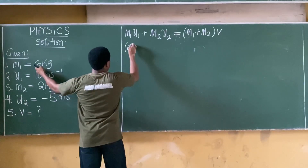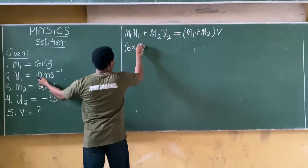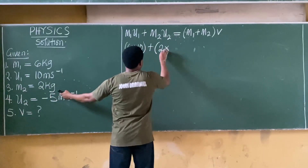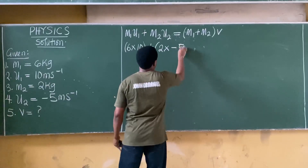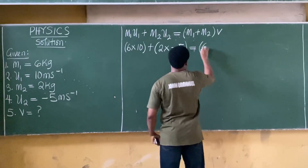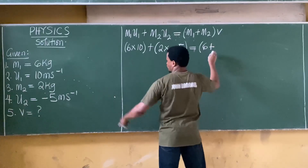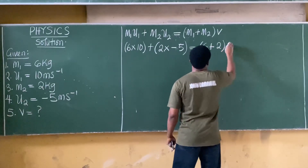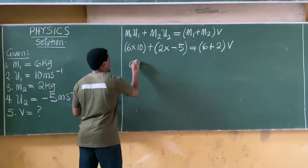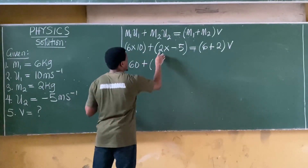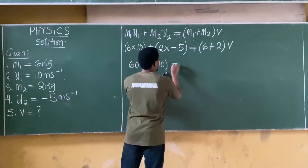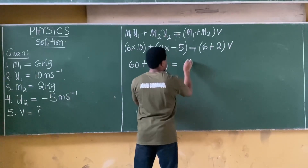Let's substitute the values: m1 is 6, so 6 × u1 (which is 10) plus m2 is 2, so 2 × u2 (which is -5) equals (m1 + m2)·v, which is (6 + 2)·v. This gives: 6 × 10 = 60, plus 2 × (-5) = -10, equals 8v.